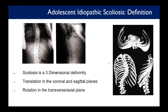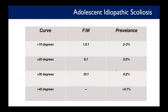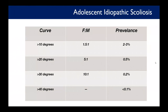Idiopathic scoliosis is the most common type; others include congenital and neuromuscular. For curves between 10 and 20 degrees there's a 1.5-to-1 female-to-male predominance with about 2–3% prevalence in the general population — fairly common.